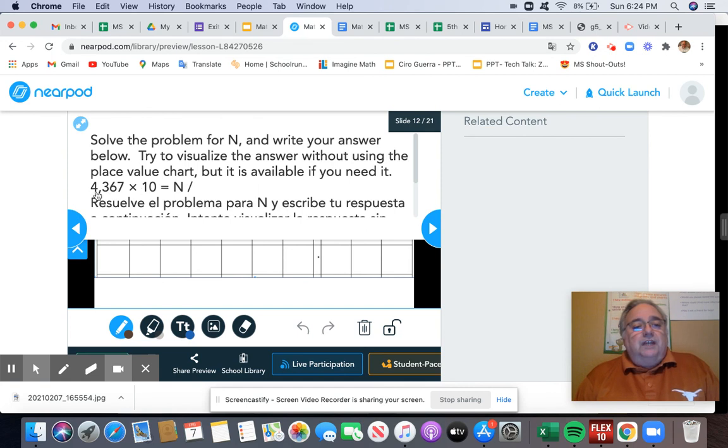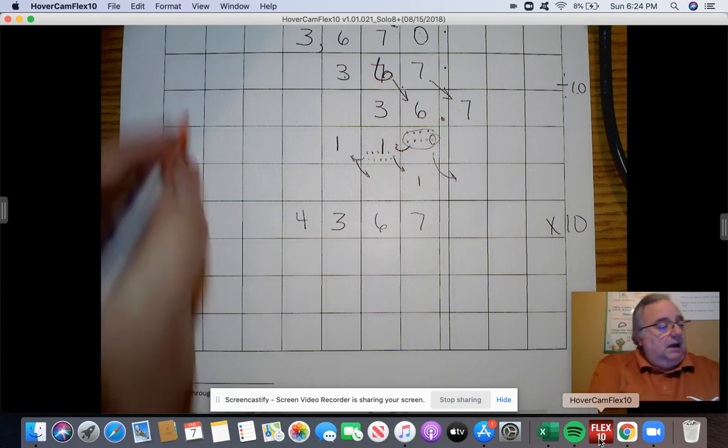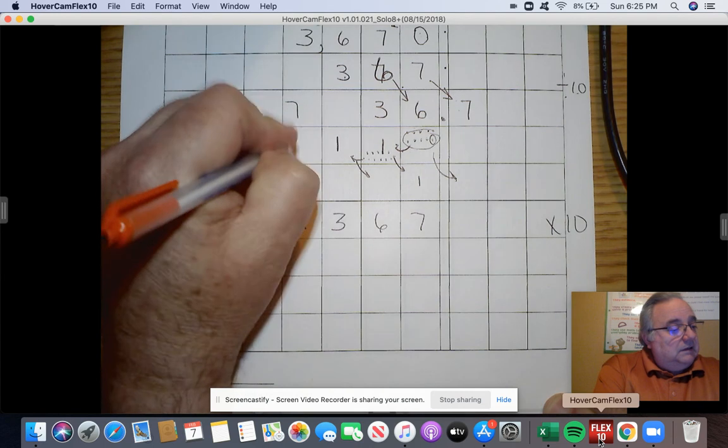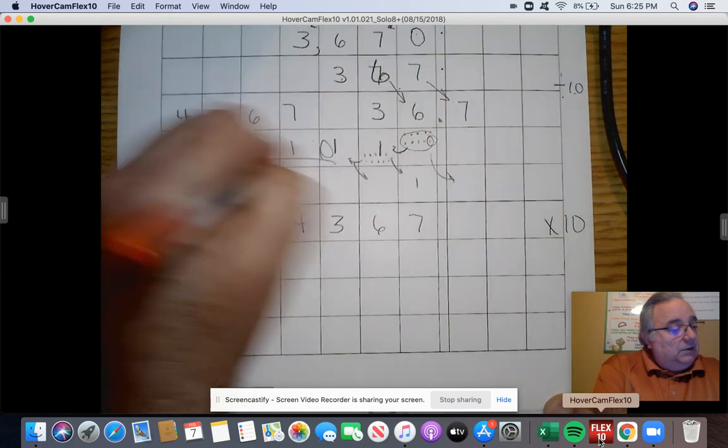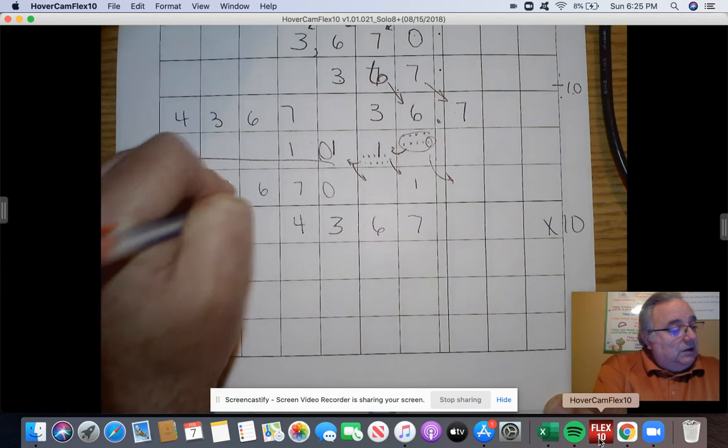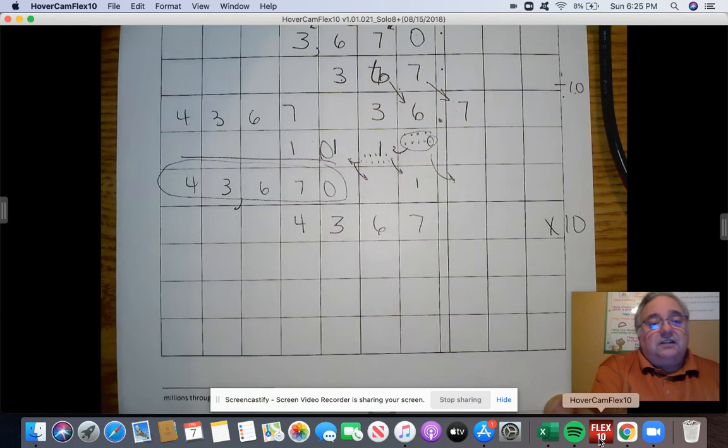So what we're going to do is take 4,367 times 10 to get N. Let me go to my FlexCam. I will be using the chart. But if I visualized it myself, I knew it looked something like this: times 10, which meant that I had a 0, 7, 6, 3, 4. So I knew the answer was going to be 43,640.